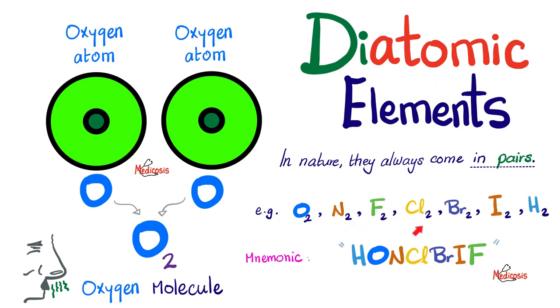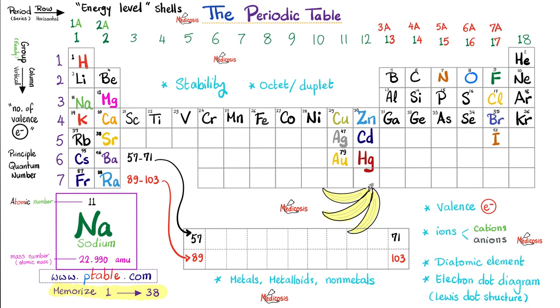What are these diatomic elements? Oxygen, nitrogen, fluorine, chlorine, bromine, iodine, and hydrogen. Mnemonic time, hunklebrief. Hunklebrief. Hey, medicosis, this sucks. Do you have something better? Yes, there is a better mnemonic.